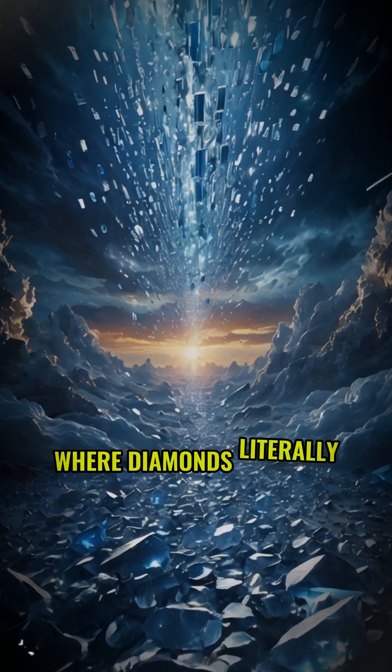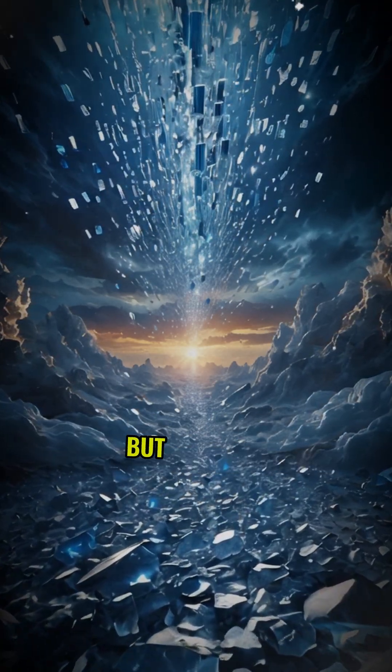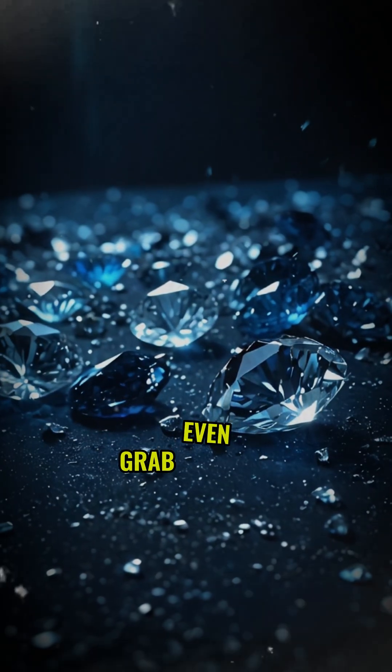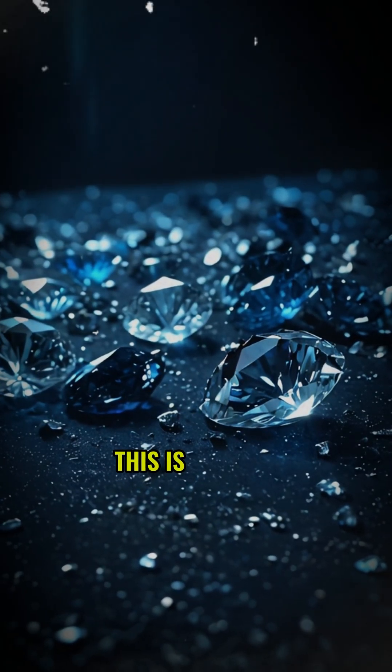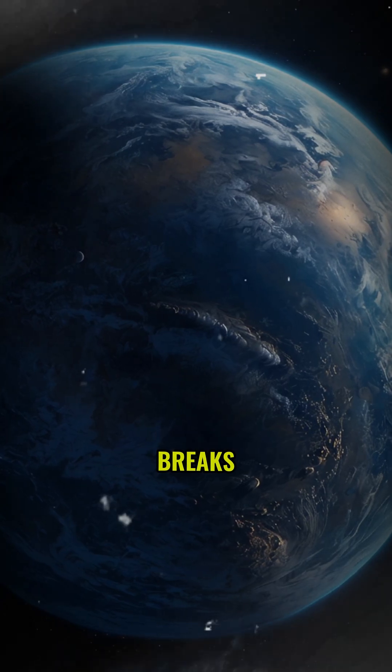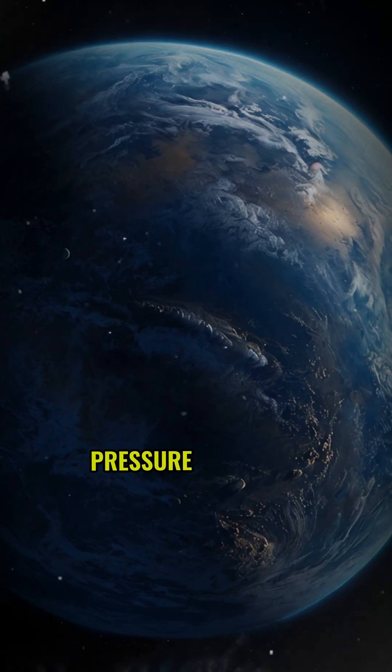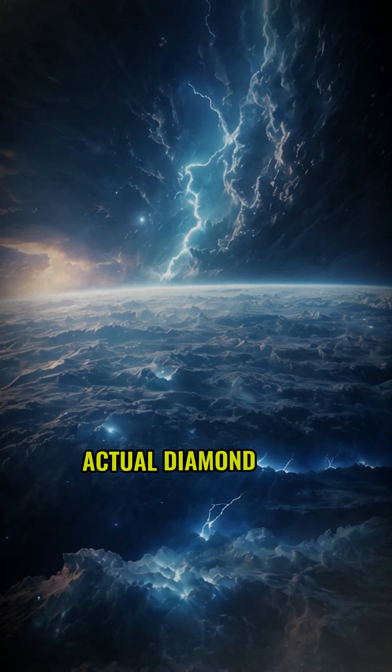There's a planet where diamonds literally rain from the sky, but you die before you could grab even one. This is Neptune, where methane breaks down under extreme pressure to create actual diamond rain.